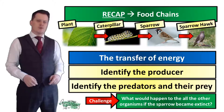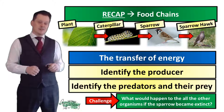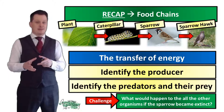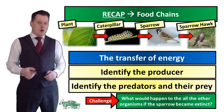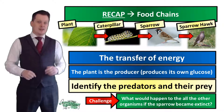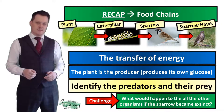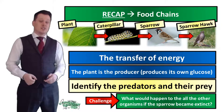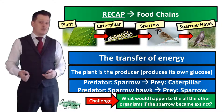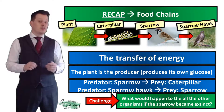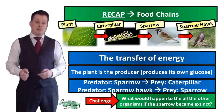The arrows represent the transfer of energy. Energy is transferred from the plant to the caterpillar, from the caterpillar to the sparrow, and from the sparrow to the sparrowhawk. The producer is the plant because it makes its own glucose by the process of photosynthesis. There are two predator-prey relationships: the sparrow is the predator and the caterpillar is the prey; the sparrowhawk is the predator and the sparrow is the prey.